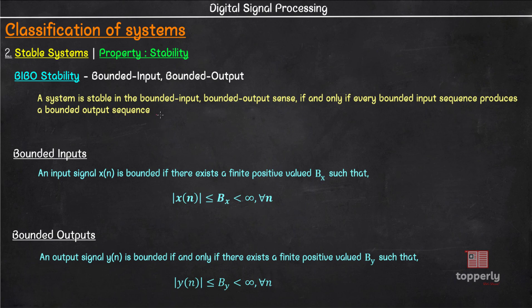Now let us read our BIBO stability criteria once again. This time it will make much more sense. A system is BIBO stable if and only if for every bounded input sequence it produces a bounded output sequence.